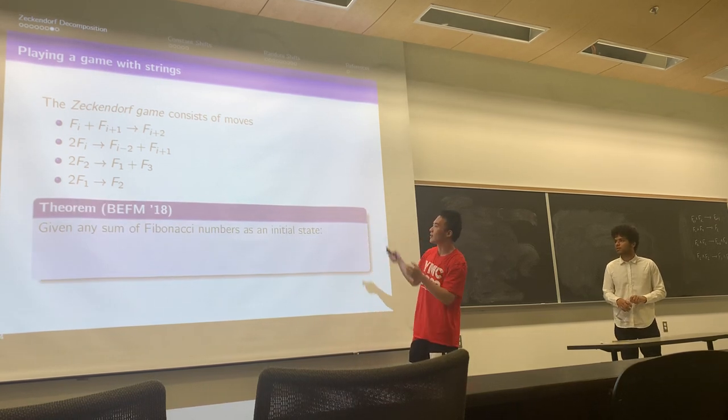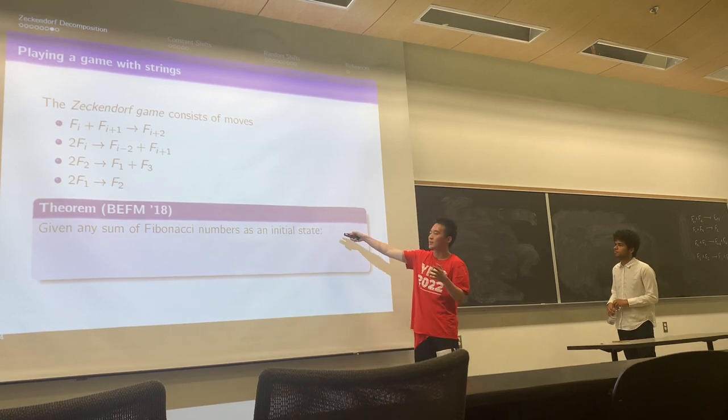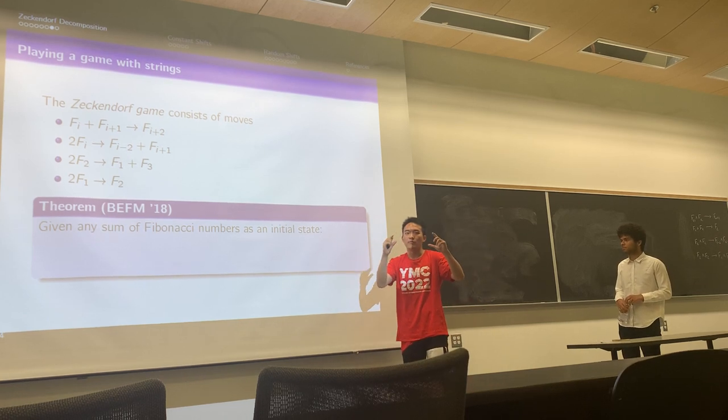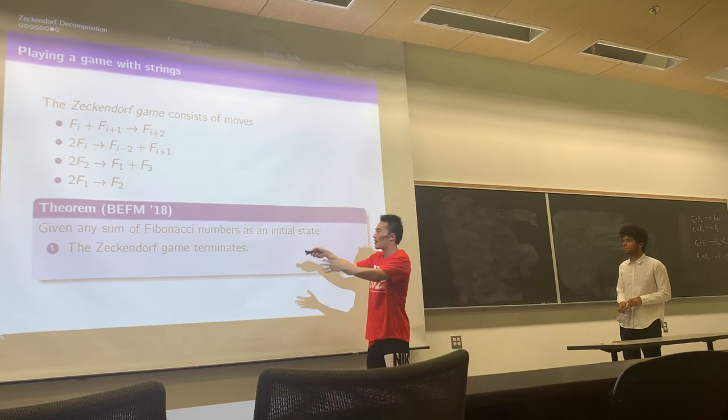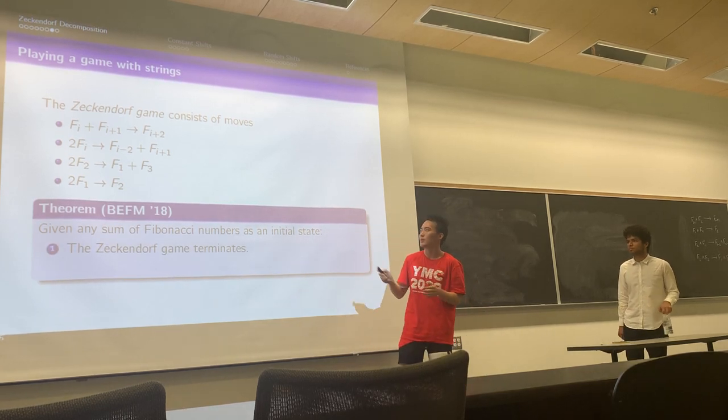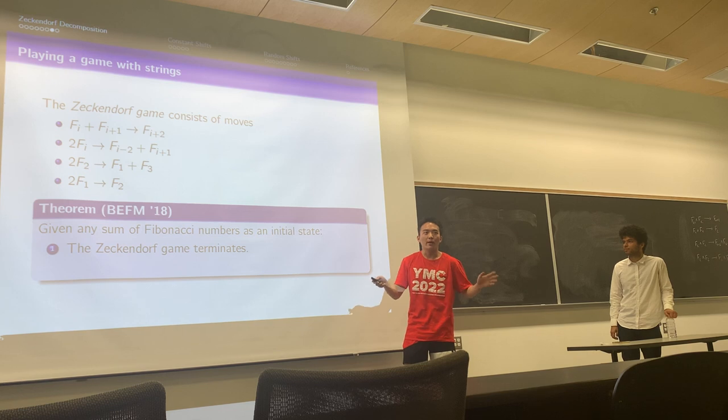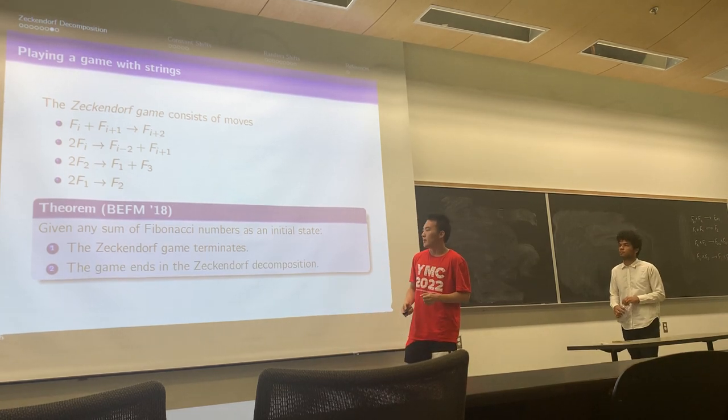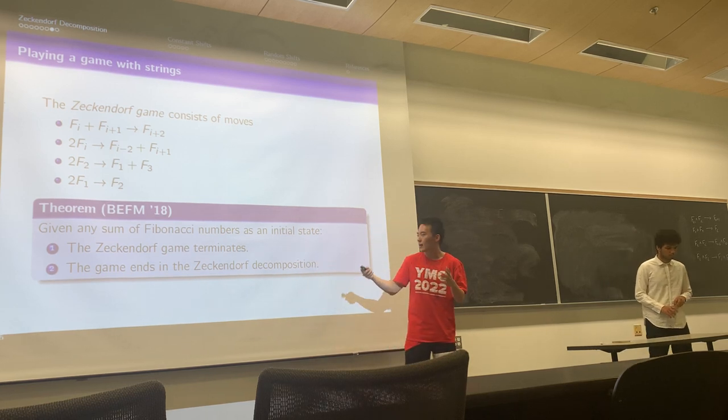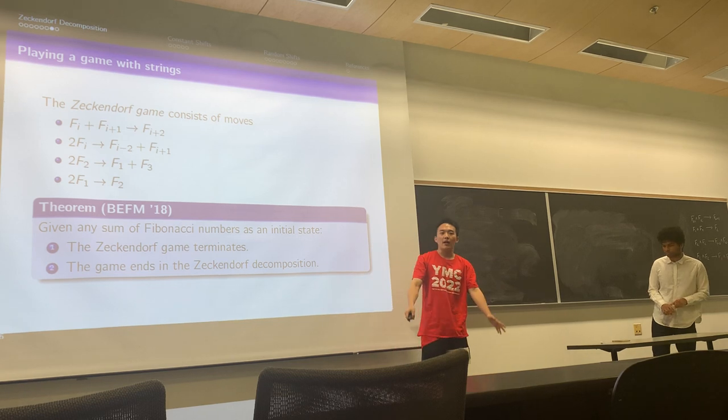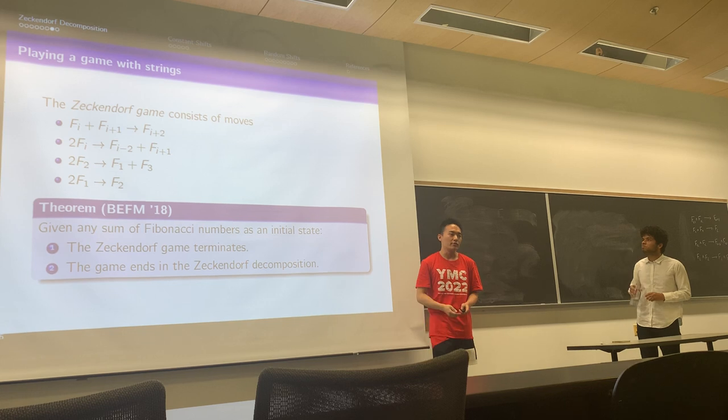This is the theorem on the Zeckendorf game. Given any sum of Fibonacci numbers as an initial string, you are considering this trivial sum of two strings, and then you apply these moves. People prove that this Zeckendorf game terminates, which means no matter how you apply these moves, you will eventually reach an end of the game where you can apply no moves anymore. Another thing is that the game ends precisely in the Zeckendorf decomposition. In finite time, you play the game until you cannot play the game anymore, and you get the Zeckendorf decomposition.